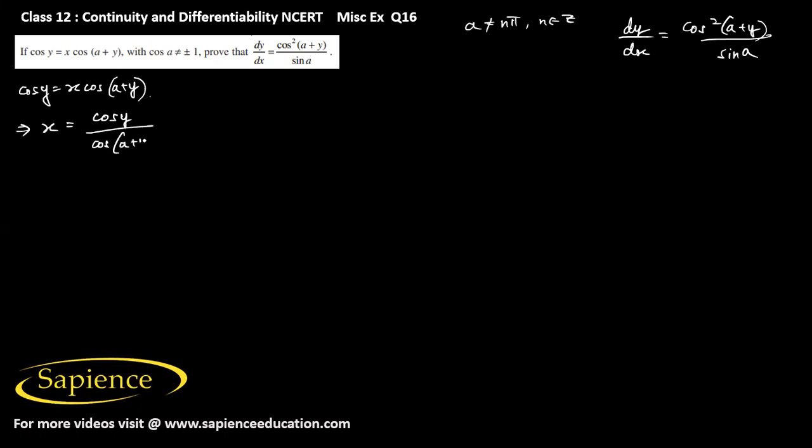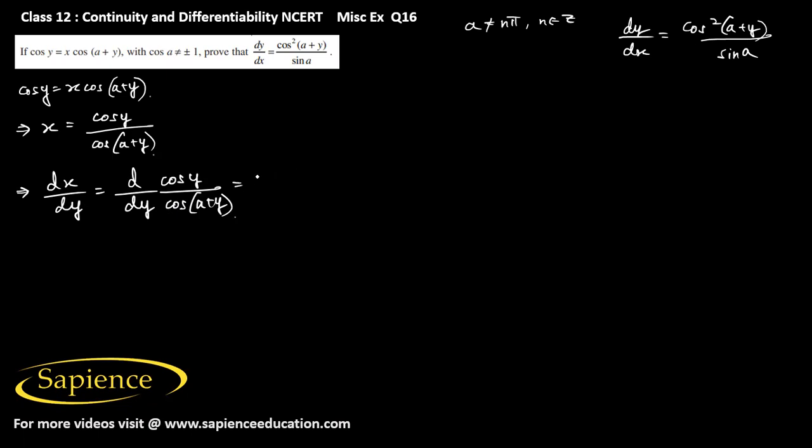From here we can write x = cos(y) / cos(a+y). Then if we take the derivative of both sides with respect to y, we get dx/dy equal to d/dy of cos(y) divided by cos(a+y). We apply the quotient rule, so this becomes cos(a+y) into d/dy of cos(y)...